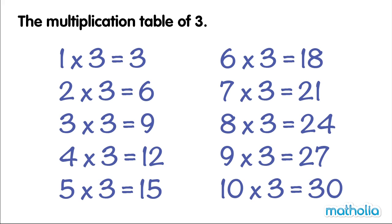6 threes are 18, 7 threes are 21, 8 threes are 24, 9 threes are 27, 10 threes are 30.